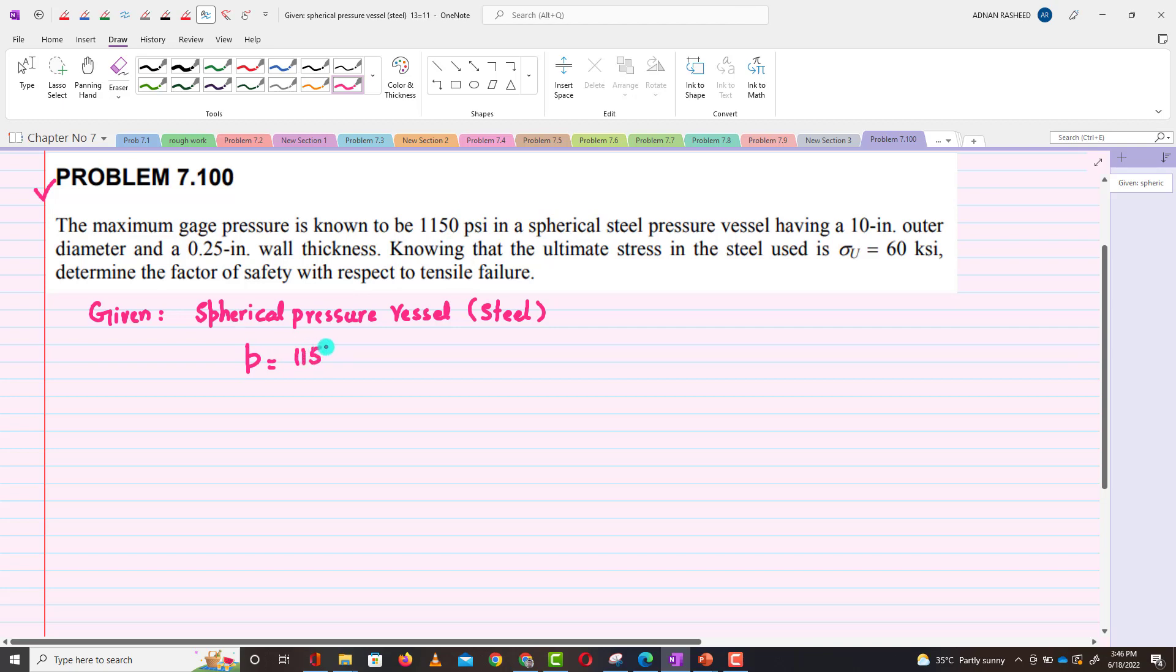The outside diameter is 10 inches, so d₀ = 10 inches, and thickness is 0.25 inches, so t = 0.25 inches.